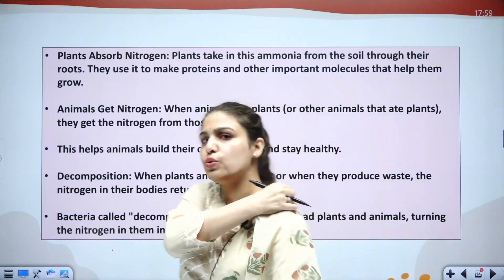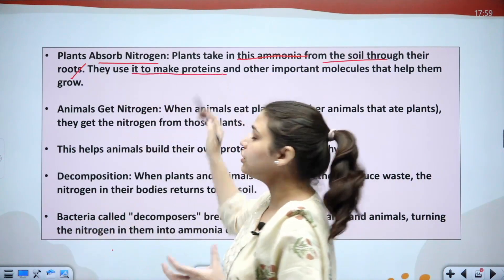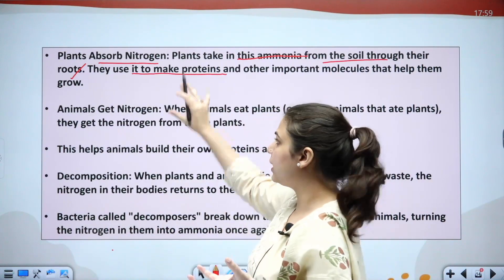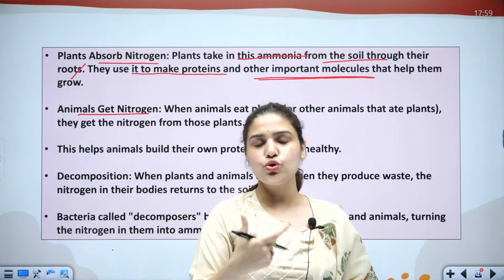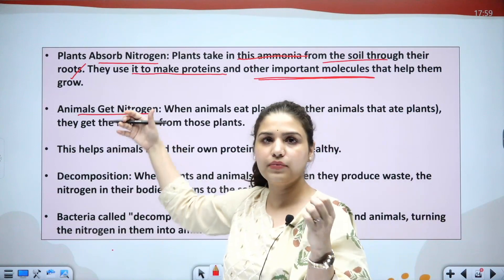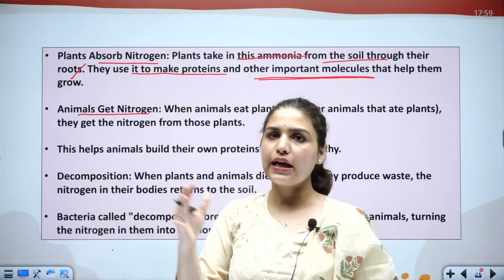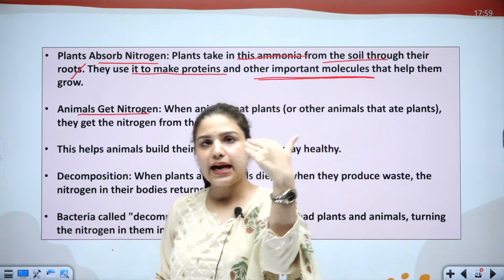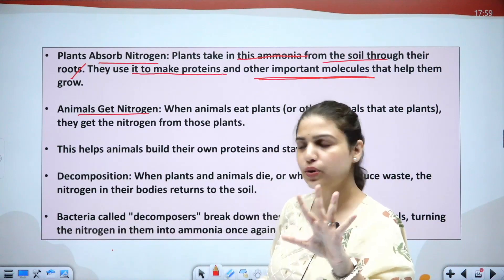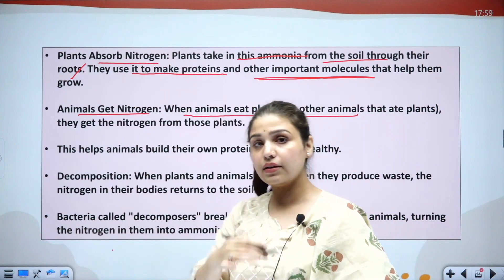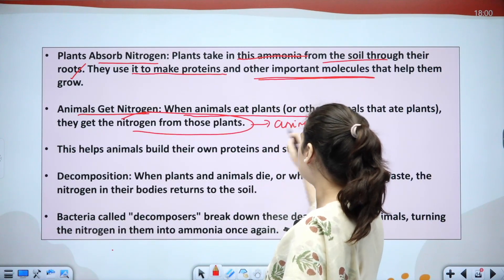Plants take organic nitrogen from the soil through their roots and use it to make proteins and other important molecules that help them grow. Animals get nitrogen through the food chain: herbivores consume plants and get their nitrogen from plants, while carnivores consume herbivores and get nitrogen from those animals. This nitrogen helps animals build their own proteins and stay healthy.